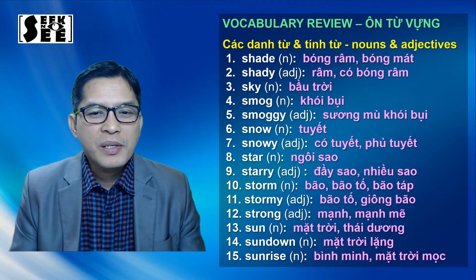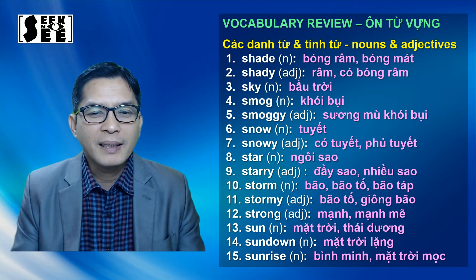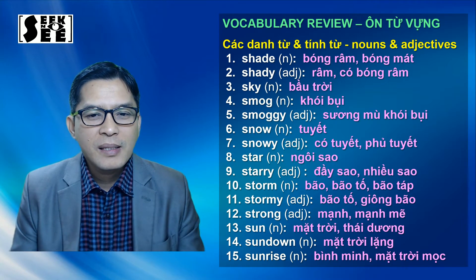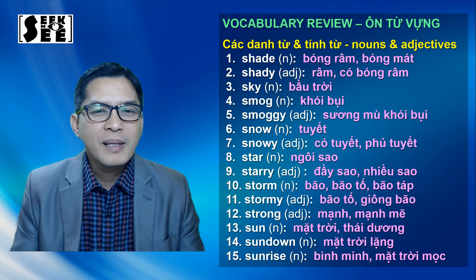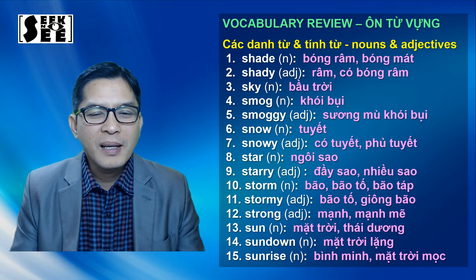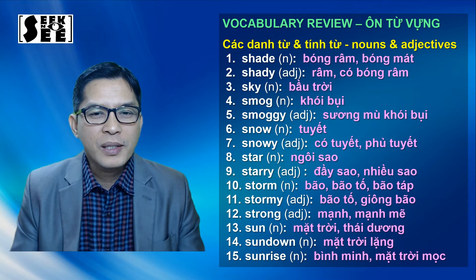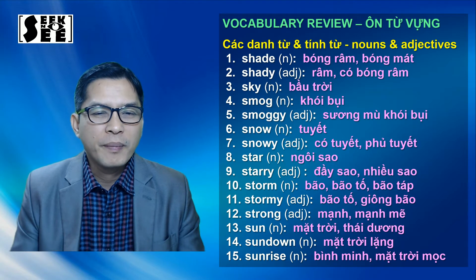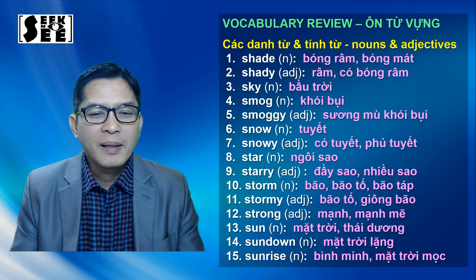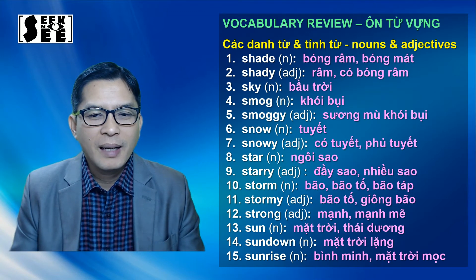Số 6: snow, snow, là tuyết. Số 7 là tính từ snowy, snowy, tức là có tuyết hay là nhiều tuyết hay là phủ tuyết. Số 8: star, star, là ngôi sao. Số 9, tính từ starry, starry, là đầy sao hay là nhiều sao. Số 10: storm, storm, bão, bão tố hoặc là bão táp. Số 11, tính từ stormy, stormy, là bão tố, dông bão.